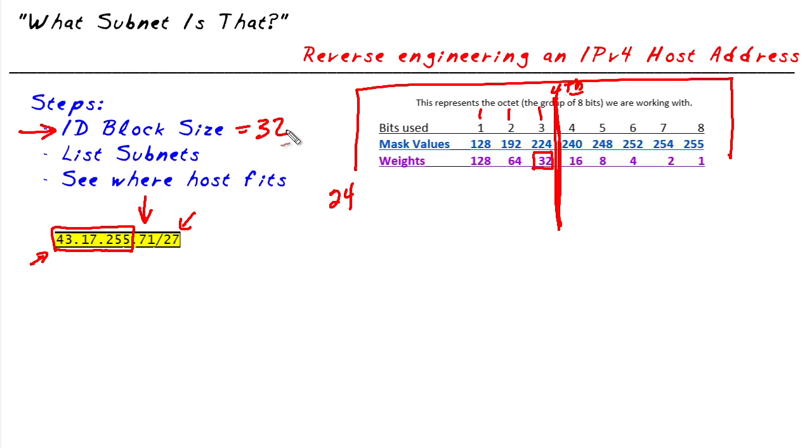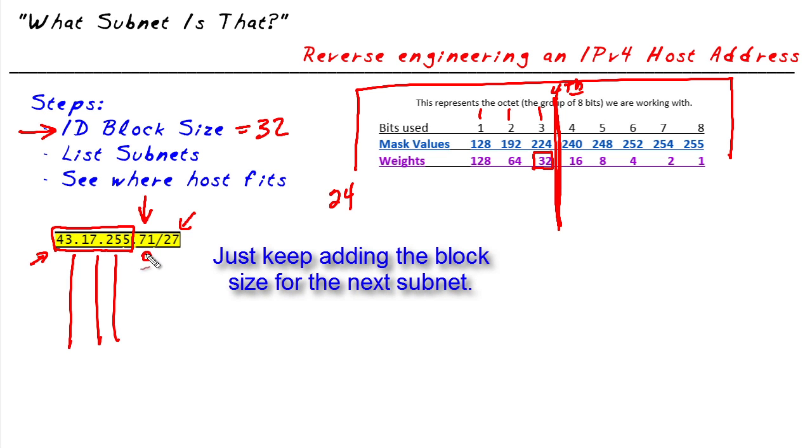Now what does that mean? It's 32, who cares? Well the cool thing is that 32, that block size, is the value of our subnets. Our subnets are going to be subnet zero, and then we're simply going to add 32 for the block size. So 32, and then 32 more which would be 64, and 32 more to be 96, and we just continue adding. So these are our subnets.